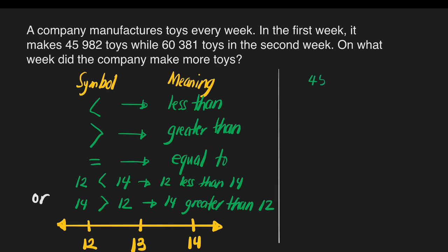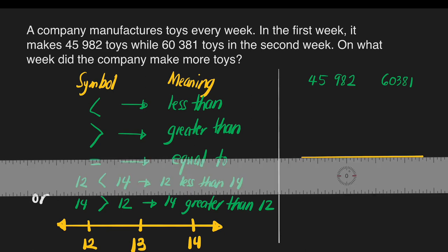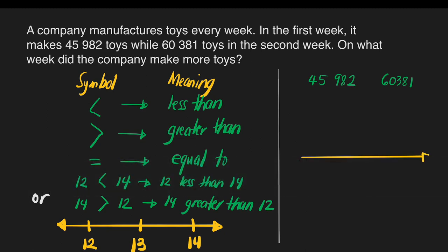Let's apply this to our problem. We have here 45,982 and 60,381. Using the number line, we have to decide which of these numbers we will put on the left and the number line's right. So which do you think will be on the number line's left? How about the number line's right?